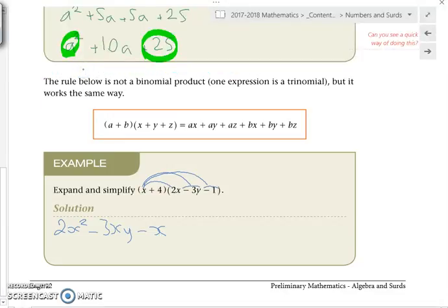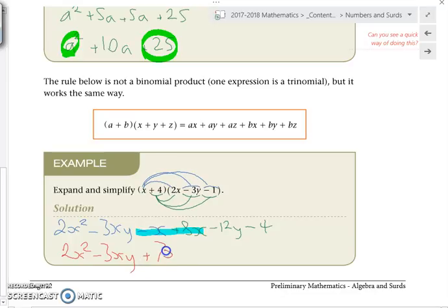Yeah, we don't write the 1, that's right. So what do we get there? What do we get there? No goats. Yes it would. Well done. All right, now look for like terms. Negative x plus 8x, anything else? Cool. So we get 2x squared minus 3xy. Negative x plus 8 gives you 7x minus 12y minus 4.